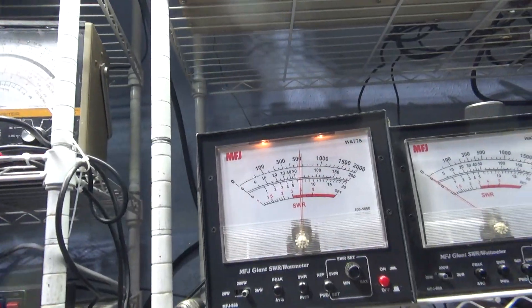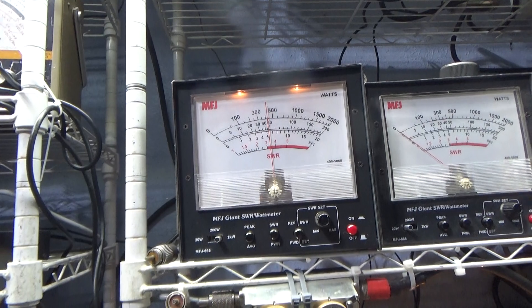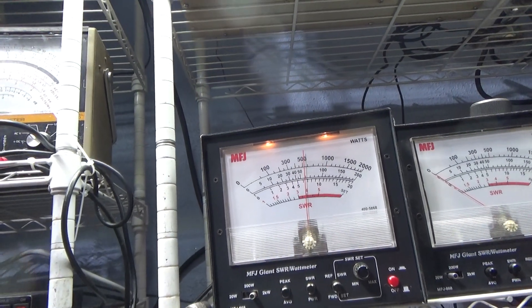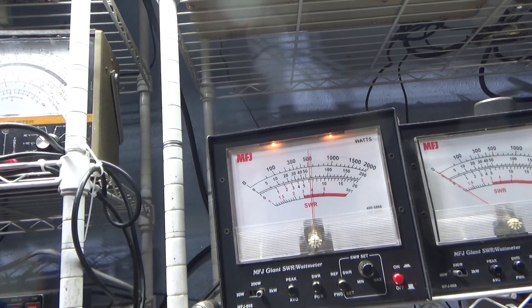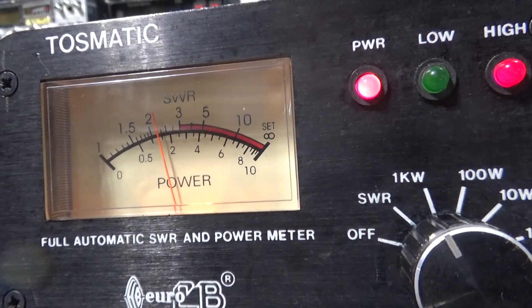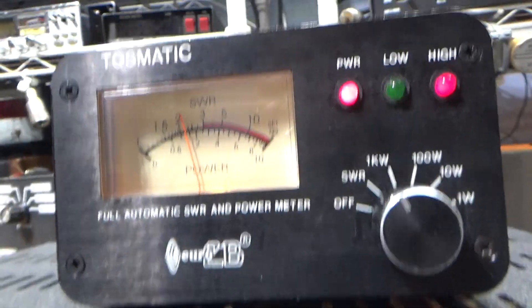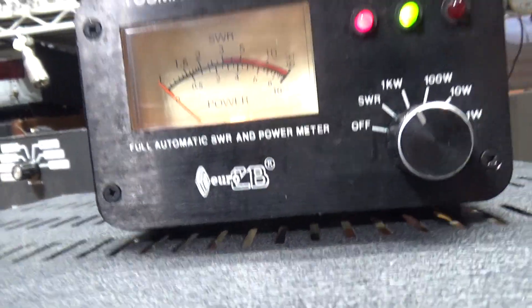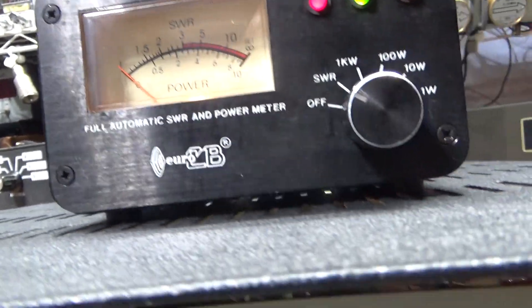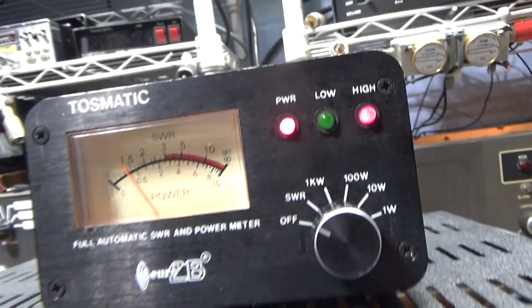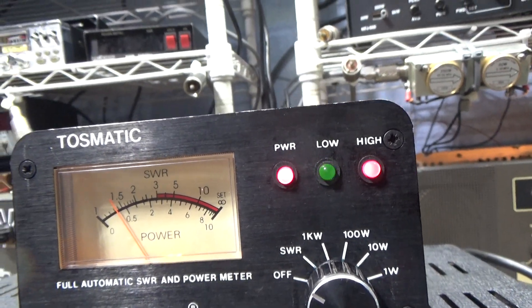On audio, about 550. Big difference between the MFJ on peak, there 600 now, and 150 on the stingy Tosmatic. On SWR too, with the amp on, about a 1.4 with the amp on.